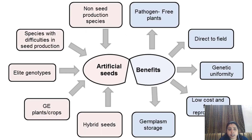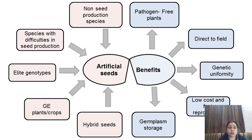Benefits of artificial seeds: Allied genotypes — that means desired or required characters — can easily be induced. Species that have difficulties in seed production can easily be grown with the help of artificial seed technology. Even non-seed producing species can be propagated through it. Pathogen-free plants can be generated. They can be directly transported and planted in fields. Genetic uniformity will be maintained. It is a low-cost technology for production of plants. Germplasm storage can be done with it. Hybrid seeds can easily be formed. Genetically engineered crop plants can be produced with the help of artificial seed technology.